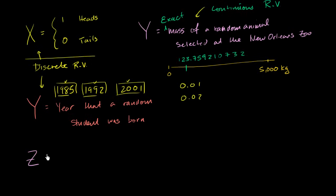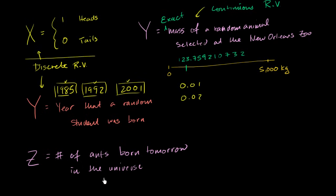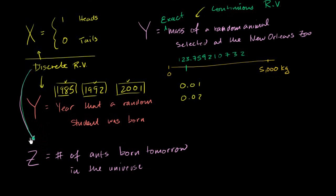Let's let random variable Z be the number of ants born tomorrow in the universe. You might argue there aren't ants on other planets, but how do we know? Maybe some ants have figured out interstellar travel. Is this a discrete or a continuous random variable? Well, we can count the number of values this could take on — it could be 1, 2, 3, 4, 5 quadrillion, or 5 quadrillion and 1. Those values are discrete. So this is a discrete random variable.